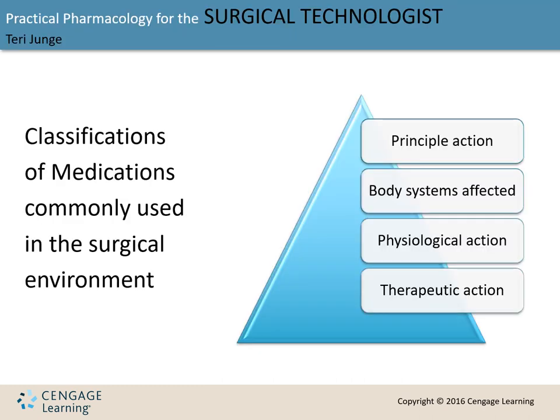Remember in Chapter 3, you heard about different types of drug nomenclature — there were three types. Let's quickly review the four main classifications of medications. The first is principal action, which is the main thing a drug was designed to do. It is determined by the chemicals used in the preparation of the drug, and so sometimes it is referred to as chemical action. Principal action and chemical action are synonymous.